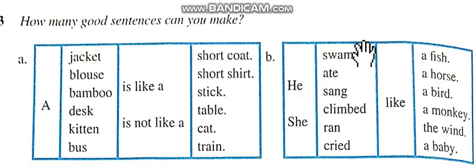He swam like a fish. He ate like a horse. He sang like a bird. She ran like a horse. She cried like a baby.